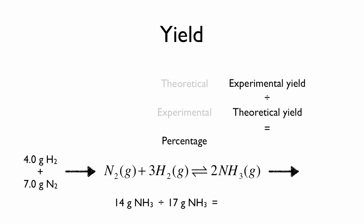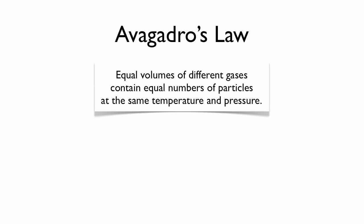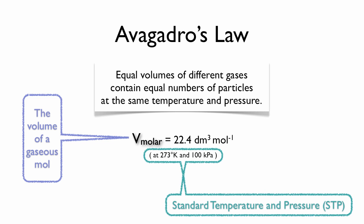Avogadro, the same man as the number's named after, discovered in his experiments that if we have the same volume of two different gases, that means they each have the same number of particles, as long as we're at the same temperature and pressure. This means that V molar, in other words, the volume of a gaseous mole, is the same for all gases. And at standard temperature and pressure, that volume is almost 22.5 liters for every mole. Notice that standard temperature and pressure is 0 degrees Celsius, and just under one standard atmosphere.